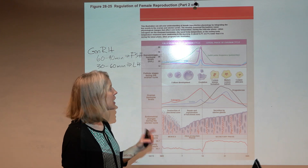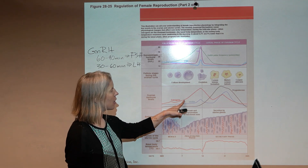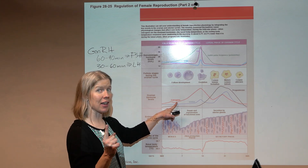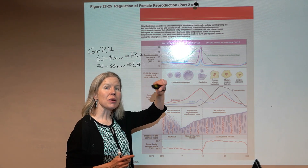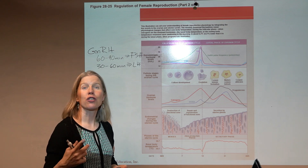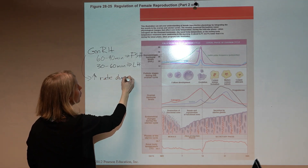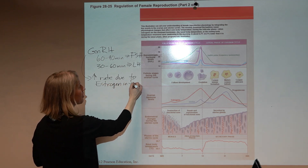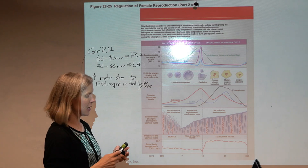The hypothalamus is running the show, but it gets influenced by other hormones. During the first half of the cycle — the follicular phase — as the follicle develops and estrogen levels rise, that estrogen feeds back to the hypothalamus and is part of what causes the increased rate of GnRH release during the follicular phase.